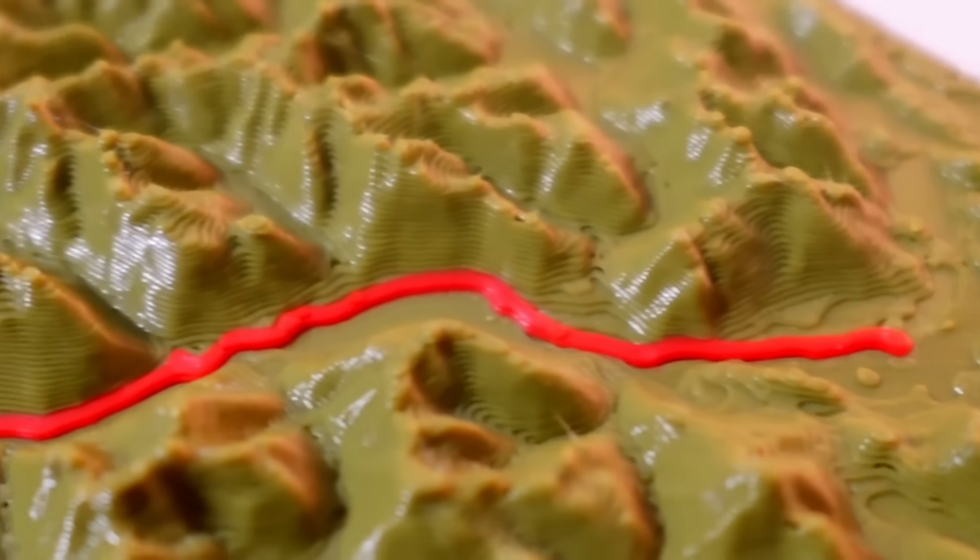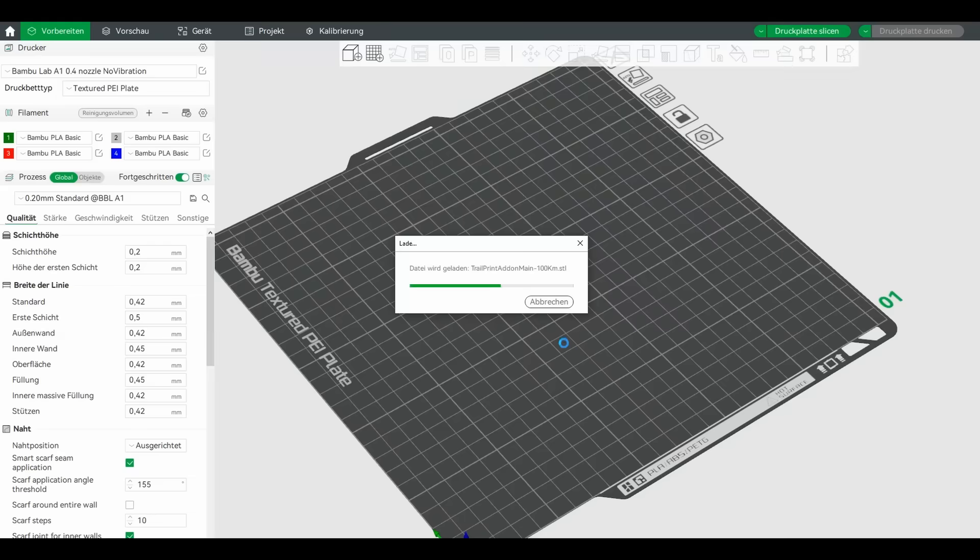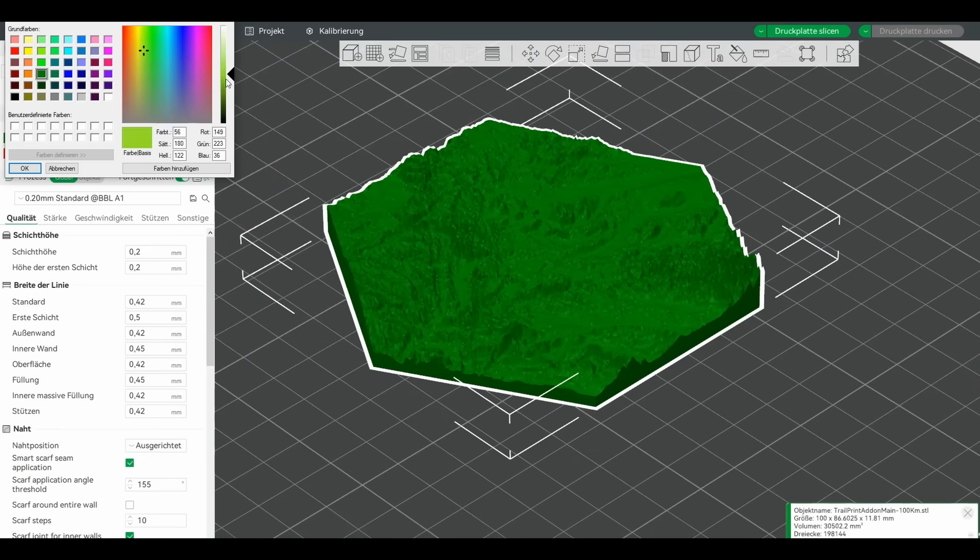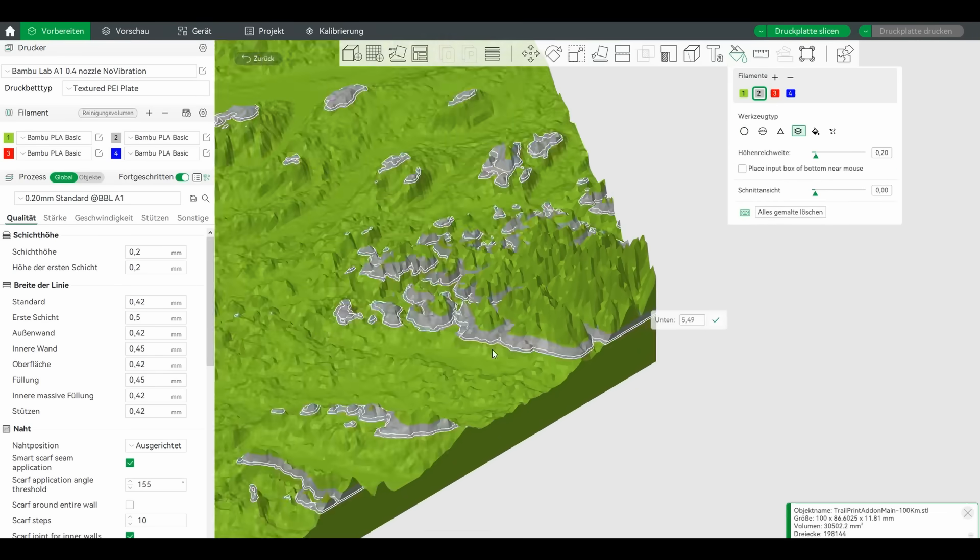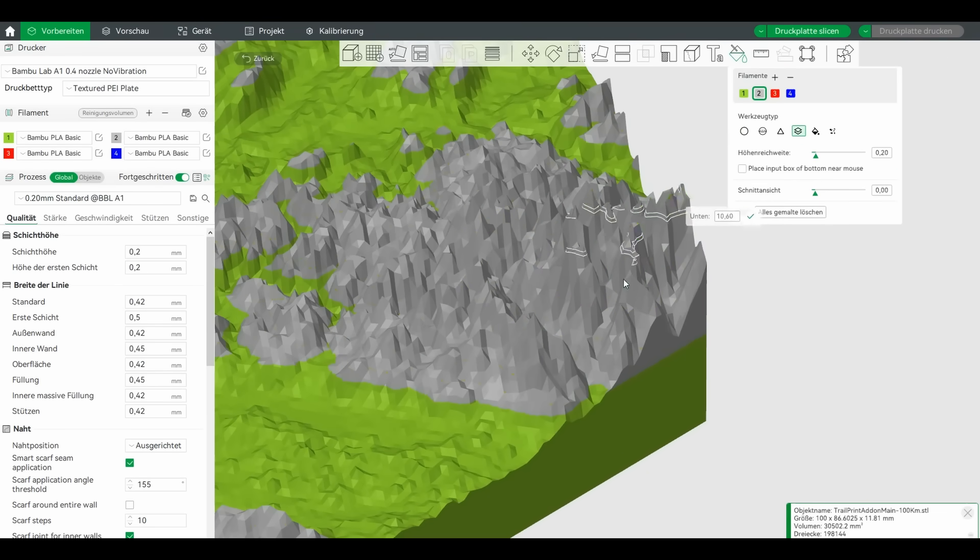But now let's go even further and paint the map in the Bamboo Slicer. I start by only importing the STL file for the map, then I select a tool to paint by layer to color the tips of the mountains.